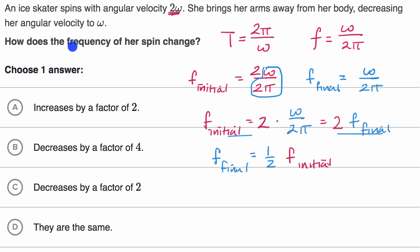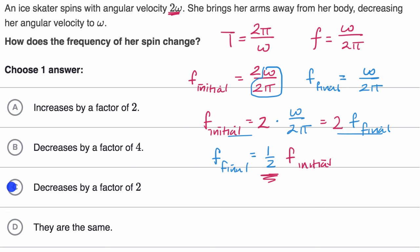So how does the frequency of her spin change? Her frequency goes down by half, and that makes sense. If your angular velocity is going down by half, you're rotating half as fast, and so you can complete half as many cycles per second. So our frequency is decreasing by a factor of two — it is halving. Decreasing by a factor of two is the same thing as saying your frequency gets multiplied by one half.